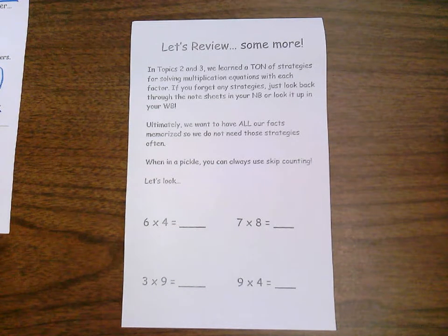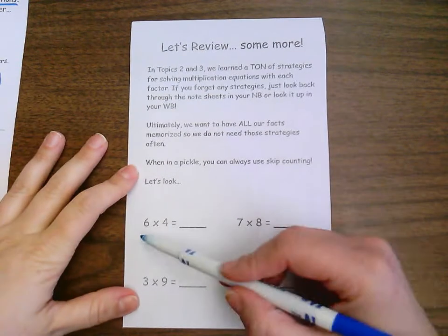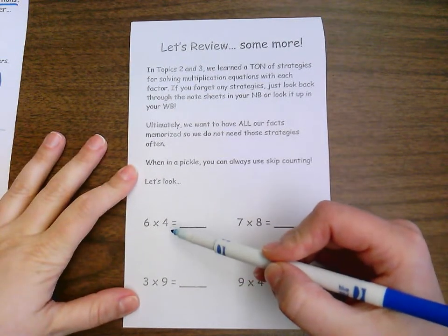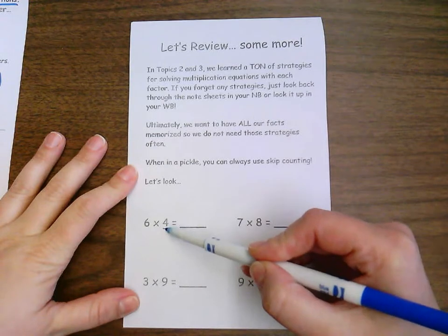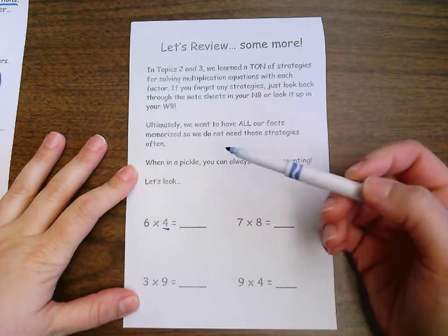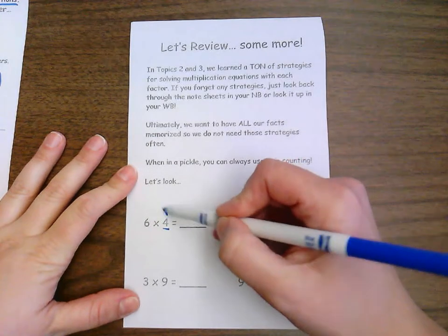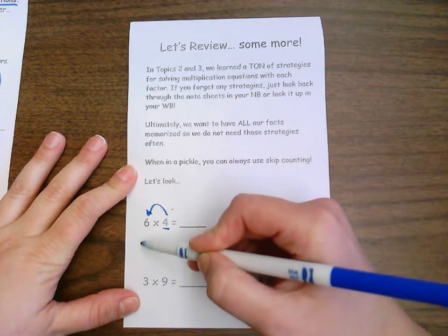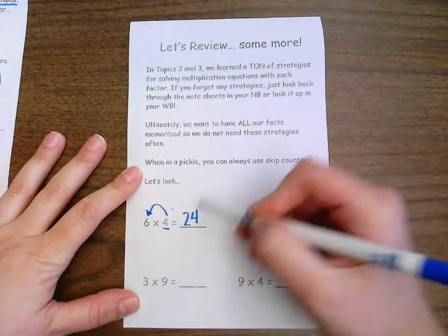So let's take a look. When we're in a pickle, we can always use some skip counting. So take a look. Six times four, I know I can solve this one using my fours tricks or my six tricks. In this case, I'm going to use my four trick. And I know it would be double, double. Six doubled is 12, 12 doubled is 24.